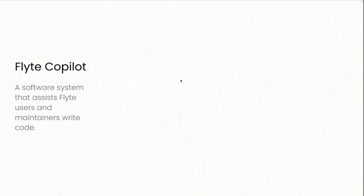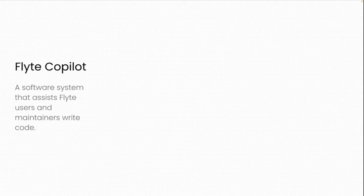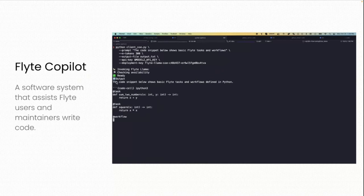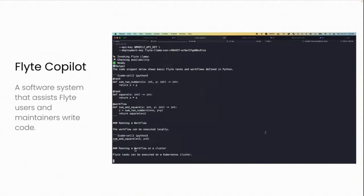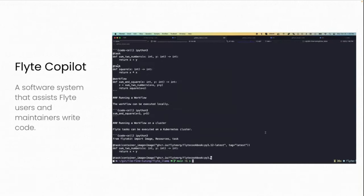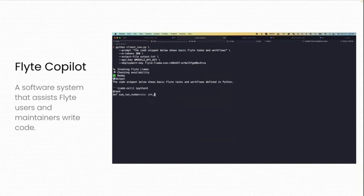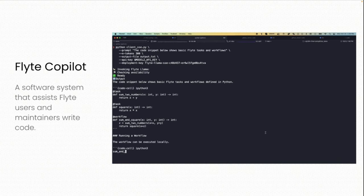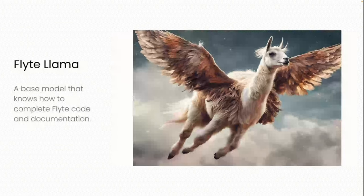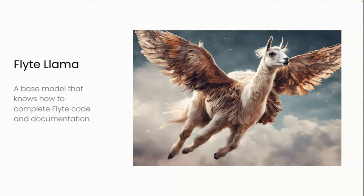What we're going to build today: I'll show you the pieces that go into building a custom fine-tuned model and a user-facing interface to access it. I'll call this project Flyte Copilot — a software system that takes in a prompt and generates Flyte code and documentation. This system will be built on FlyteLlama. I used stable diffusion to generate a nice image of a flying llama. The base model is built on top of CodeLlama and fine-tuned on Flyte repos specifically.